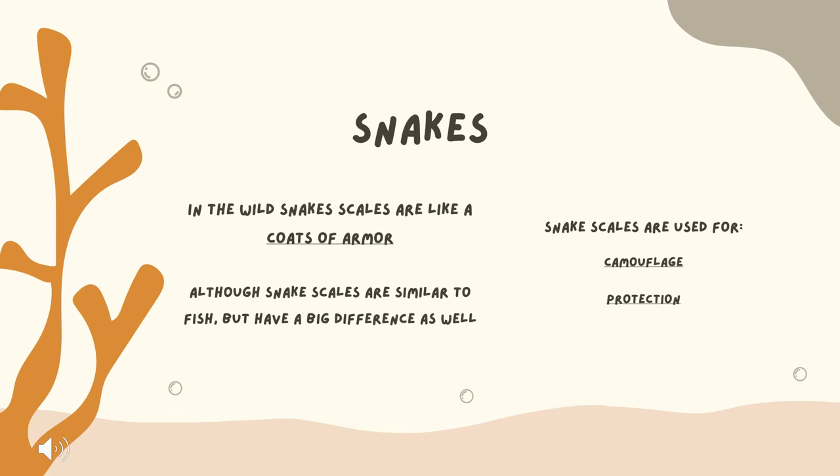Beginning with snakes — in the wild their scales have several uses. Similar to fish, scales act as a coat of armor that adds a layer of protection. However, unlike fish, a snake cannot lose a single scale because a snake's scale is a continuous folded skin. If a snake damages a scale, it is the same as a human getting cut or having damage to their skin. Snake scales are used for both camouflage and protection. With camouflage, the colors vary widely depending on the environment, ranging from dull brown all the way to bright green. For protection, snake scales are hardened and act as a great asset in conflict, making snakes hard to penetrate.